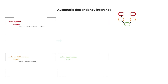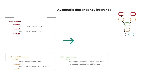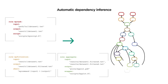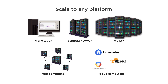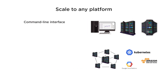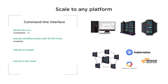Dependencies between rules and execution order are inferred automatically, yielding a graph of jobs. Based on the graph of jobs, execution can be automatically parallelized and scaled to all major computing platforms without modification of the code.